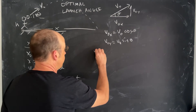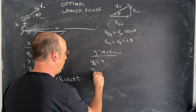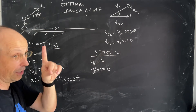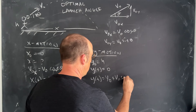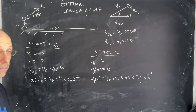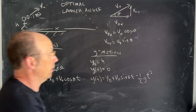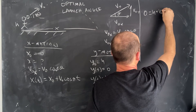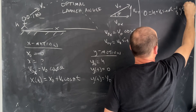Now let's go over the y-motion. In the y-direction, my initial y is h and my final y is zero because it lands on the ground. My only important equation is: y = y₀ + v₀ sine θ · t − ½g·t². Substituting in the known values: 0 = h + v₀ sine θ · t − ½g·t².